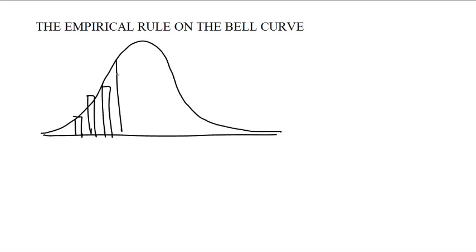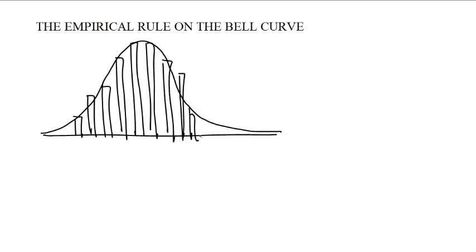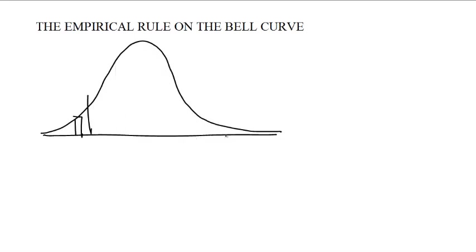Now I'd like to talk about the empirical rule on the bell curve. The empirical rule only deals with normal distributions. Normal distributions are basically histograms that look like this. Now remember, this is actually a histogram - it's a whole bunch of bars, but we're imagining that we've taken so much data that it has smoothed itself out to be a curve like this.